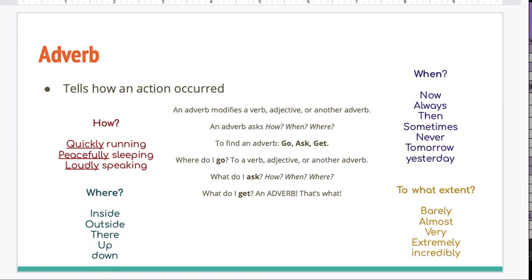An adverb modifies a verb, adjective, or another adverb. An adverb asks how, when, where. Define an adverb: go, ask, get. Where do I go? To a verb, adjective, or another adverb. What do I ask? How, when, where. What do I get? An adverb. That's what.